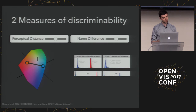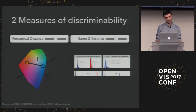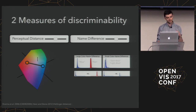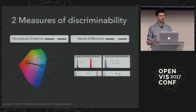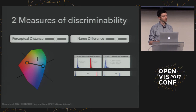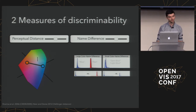For example, a blue and red color have very different histograms and large color name differences, whereas a dark blue and light blue have overlapping histograms and a smaller color name difference. These get at two very different notions of discriminability — a perceptual notion and a naming notion, which could be useful for applications like giving a talk.